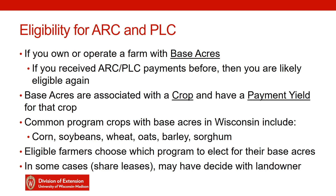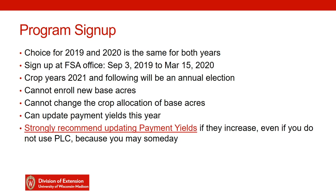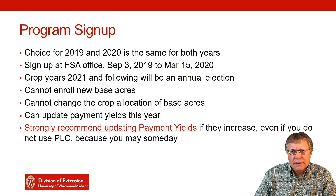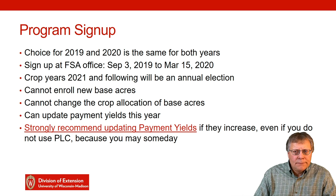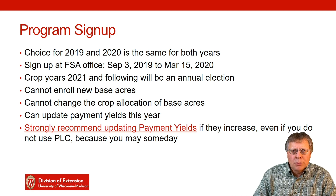Eligible farms will choose which program to elect for their base acres on each of their FSA farms. In some cases, such as with share leases, they will decide with their landlord. Sign-up for these programs started on September 3rd of this year, 2019, and goes on until March 15th of 2020. At this point, farmers are first choosing their sign-up for the 2019 and 2020 crop years, and that sign-up is going to be the same for both years.